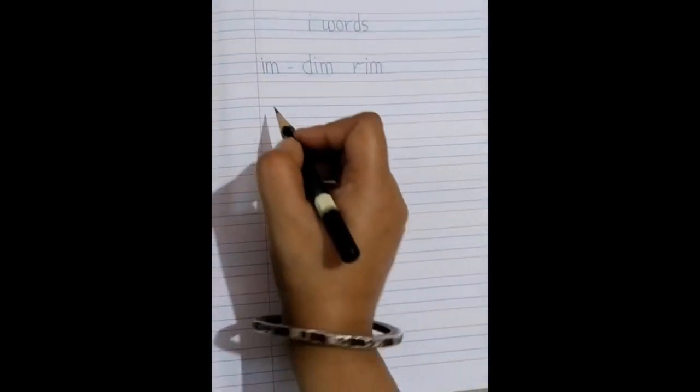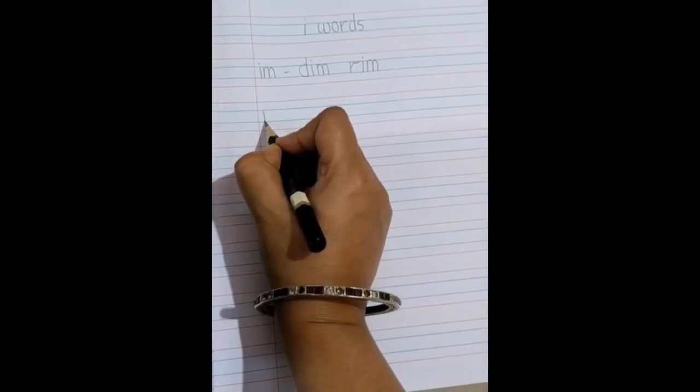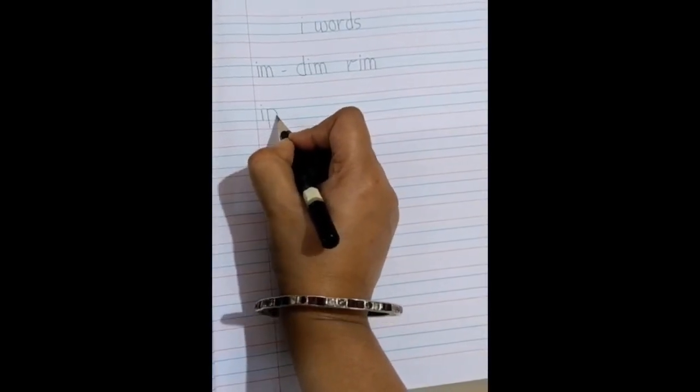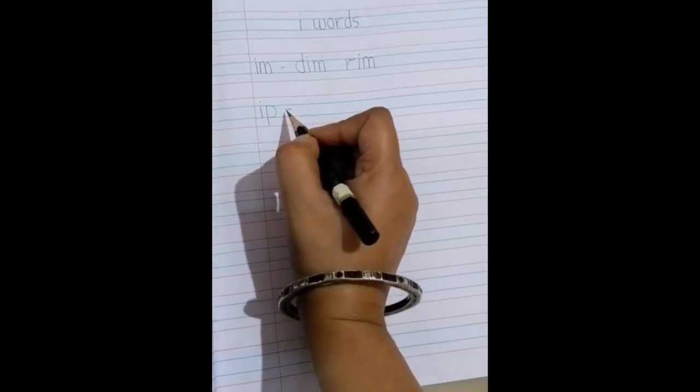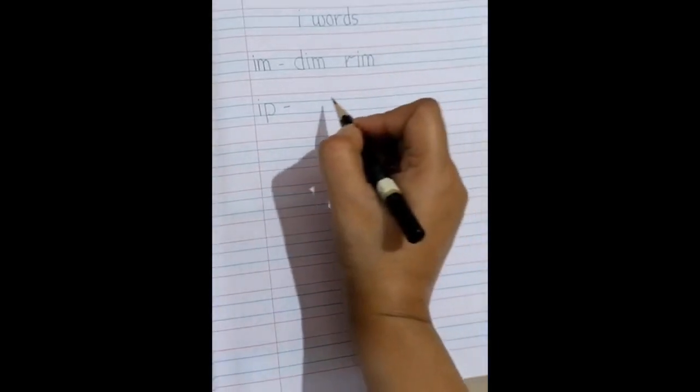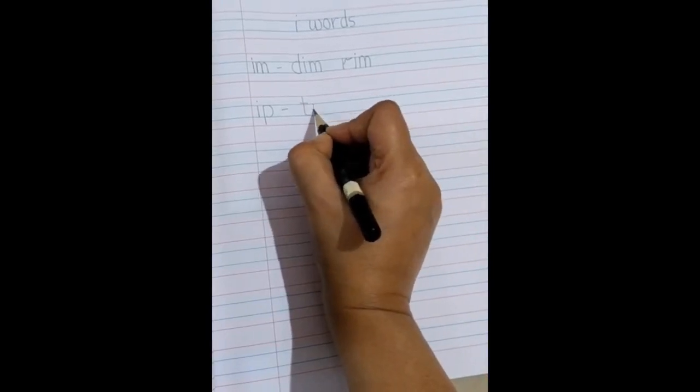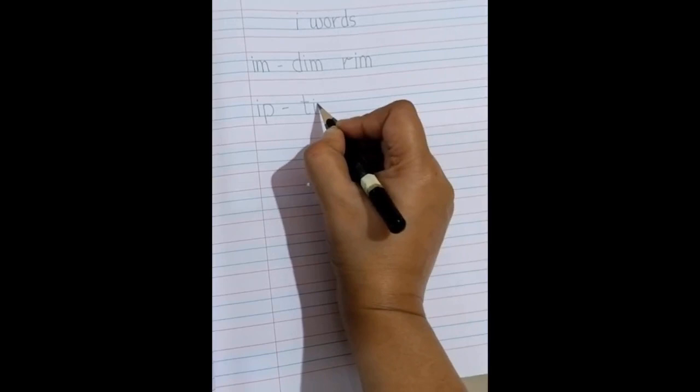Yes, now moving on to the next I family word. Ip. Sound of I is E and sound of P is per. And together we will become ip. So the word we are going to write is tip. So again it is the tip of the pencil with which I am writing. So Tuh, ip, tip.